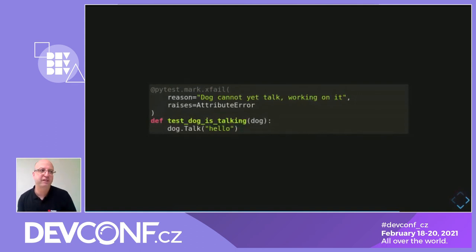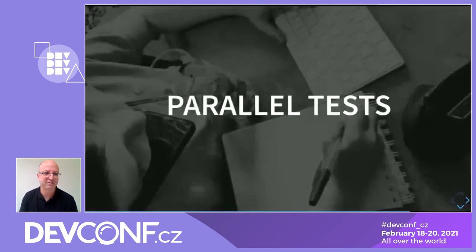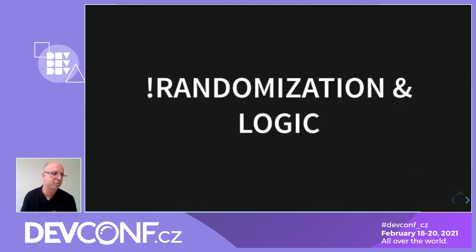Parallel testing is a big subject — we could probably take a full lecture about it — but just be careful. When you think about running multiple tests in parallel against the same system, it may save you some time, but on the other hand it may also cause randomness in execution because you may have collisions, and you need to handle them. So you need to balance between time savings and random failures. Randomization: be careful not to put a lot of random input in your tests, because we usually write tests that we expect to pass deterministically. And regarding logic: limit the logic inside a test — it should be pretty simple and not complicated with if statements.